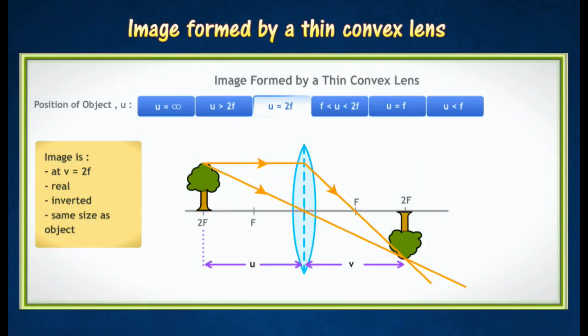When the object is placed at 2F, the image will appear at 2F, inverted. The image is the same size as the object.